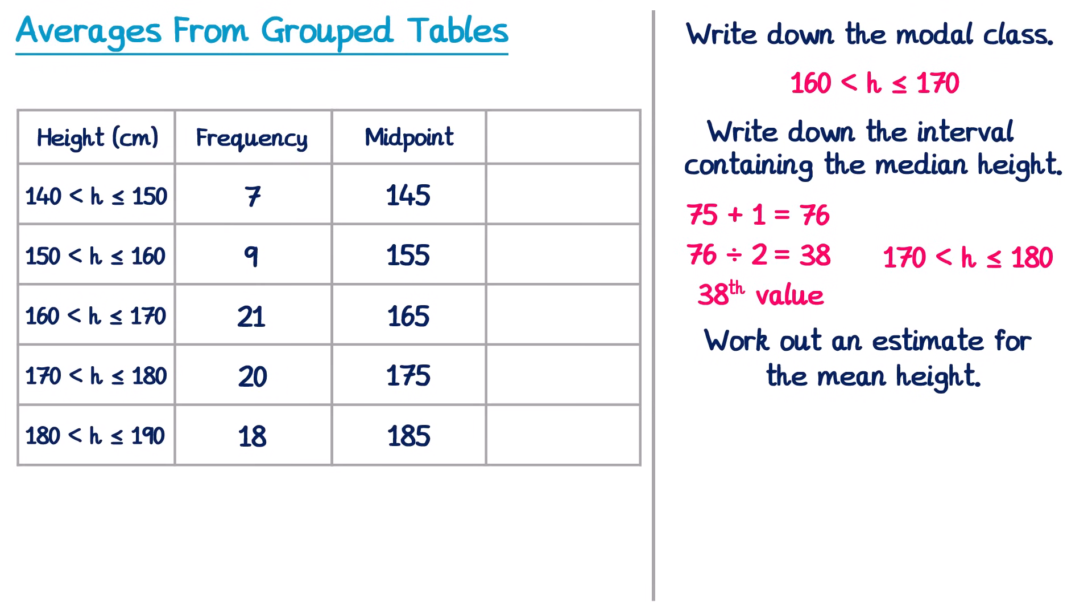Now we can carry on just as we did before. The next thing we did was multiply the frequencies by those heights. So we can call this extra column the midpoint times the frequency. You'll probably have a calculator for a question like this, so type all of these in. For the first one you get 1015, the next one you get 1395, the next one you get 3465, then 3500, and for the final one 3330.